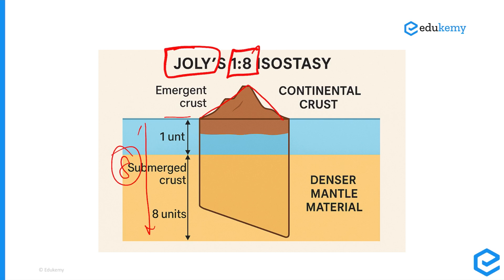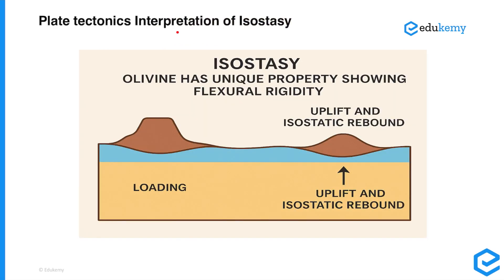The flotation principle is the most accepted principle today, as it is more appropriate and applicable. With some modifications it fits the correct scenario, and it is even applicable to lithospheric plates as they float over the asthenosphere. The third interpretation is the plate tectonics interpretation of isostasy, which is also based on the flotation principle.